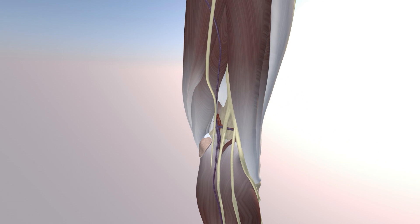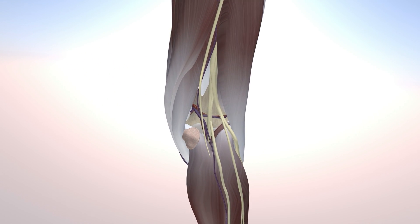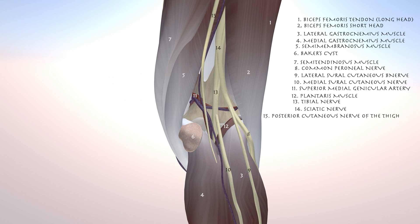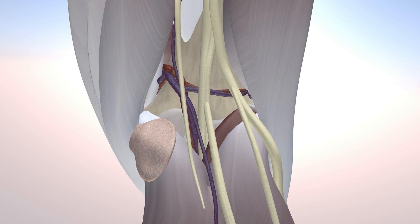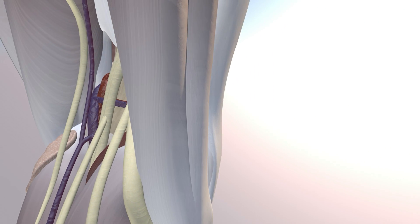You can appreciate some of the neurovascular structures on the back of the knee. This patient did not have a Baker cyst, but this model does delineate a Baker cyst. You can also appreciate the medial and lateral sural cutaneous nerves that branch off the common peroneal and tibial nerve.